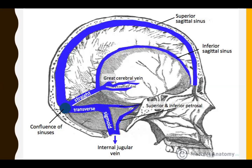Let's carry on. This is the overview of sinuses we are going to discuss today: the superior sagittal sinus, inferior sagittal sinus, great cerebral vein, straight sinus, transverse sinus, confluence of sinuses, sigmoid sinus draining into the IJV, and the superior and inferior petrosal sinuses. The cavernous sinus will be discussed in the next session.